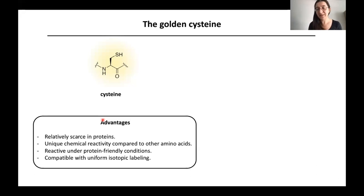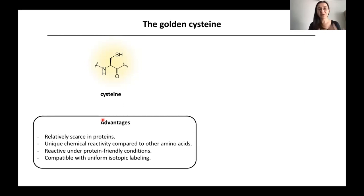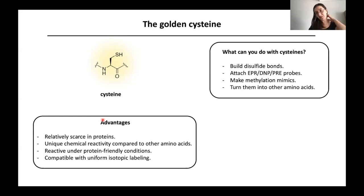Cysteines are reactive under protein-friendly conditions — at physiological temperatures, in water, at neutral pH — where a protein can remain folded while we do chemistry on it. For NMR spectroscopists, a great advantage is that anything we do with cysteines is compatible with uniform isotopic labeling. We can make our protein in bacteria, add N15 and C13 labels, and then do the chemistry we need afterward — so we have a labeled protein visible by NMR.